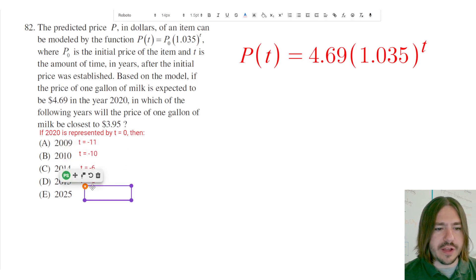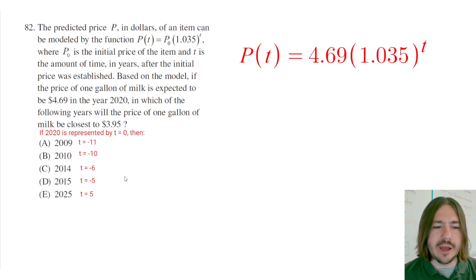And 2025 would be 5 years after 2020. We can tell right away this isn't going to be the answer because the price that we're interested in is less than 4.69. And our growth factor is going to be greater than 1, so we know that the price is going up. So right away we could take E out.